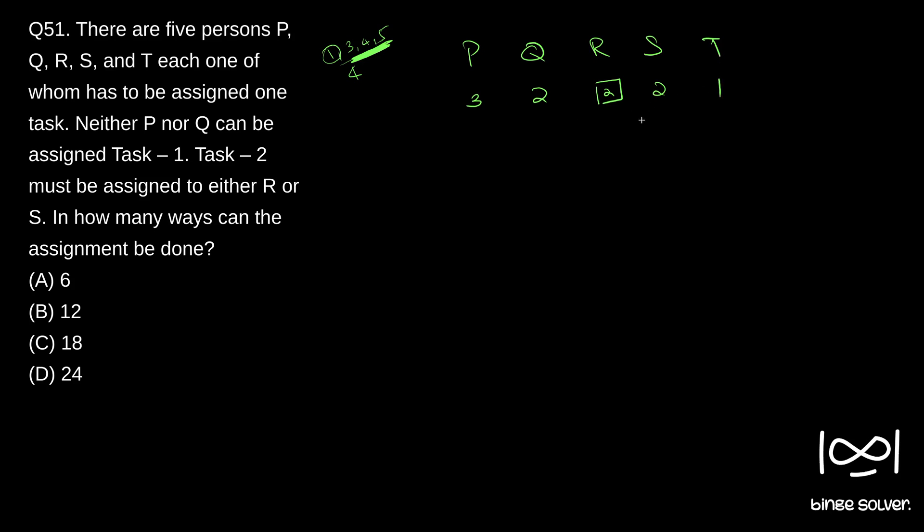So if this is the case, total number of ways we can do this will be what? 3 into 2 into 2 into 1. See, this is an assignment so it should not be multiplied - 3 cases into 2 cases into 2 cases into 1. So 3 into 2 is 6, 6 into 2 is 12, so 12 ways. This is when task 2 is assigned to R.